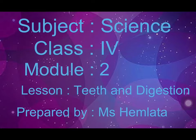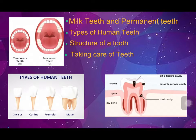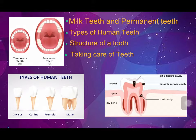Subject: Science, Class 4, Module 2, Lesson: Teeth and Digestion. Students, in the first module we talked about milk teeth and permanent teeth. Milk teeth are 20 and permanent teeth are 32. Types of human teeth include incisors, canine, premolar, and molar. We also learnt about the structure of a tooth — the root and crown.